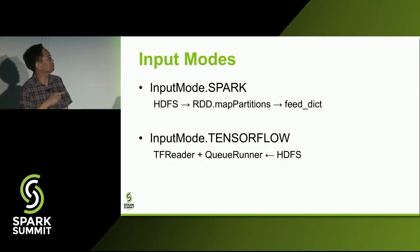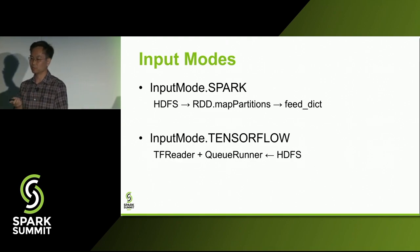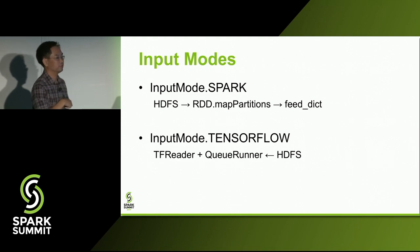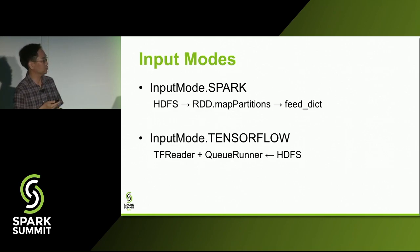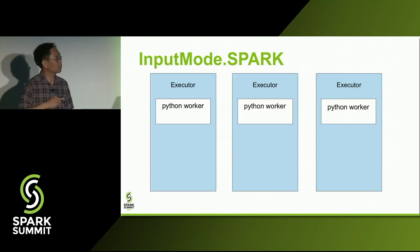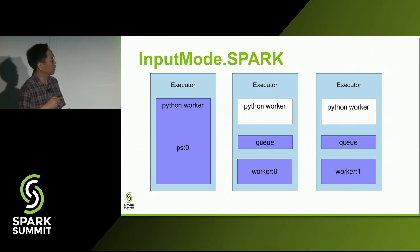I want to get into the two different input modes, because this comes up quite a bit when we talk to customers. In the first mode, Spark is in control — it reads from HDFS using RDD mapPartitions and feeds it into your TensorFlow app. In Spark mode, TensorFlow generally has a Python worker to execute Python tasks, and we launch the TensorFlow nodes into the workers.